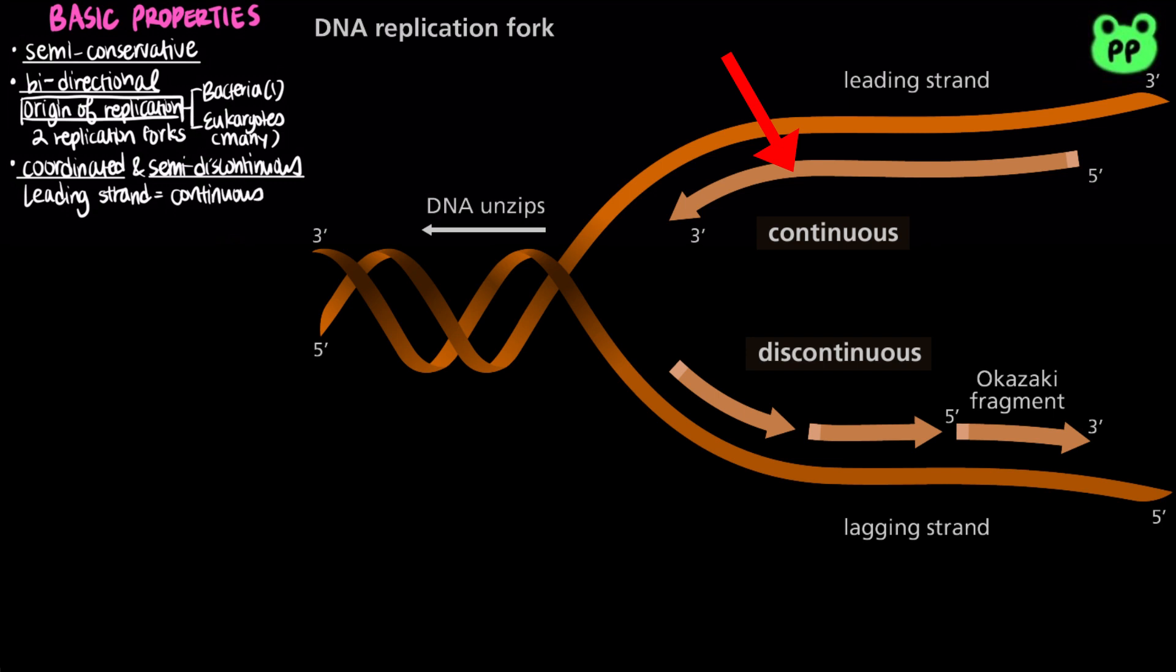Along the other strand called the lagging strand, DNA polymerase must work in the direction away from the replication fork, discontinuously synthesizing a series of segments called the Okazaki fragments. Because the leading strand is synthesized continuously while the lagging strand is synthesized discontinuously, overall DNA replication is said to be semi-discontinuous.